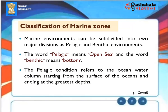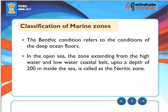The Variation of Marine Zones: Marine environments can be subdivided into two major divisions — pelagic and benthic environments. The word pelagic means open sea and the word benthic means bottom. The pelagic condition refers to the ocean water column starting from the surface and ending at the greatest depths. The benthic condition refers to the conditions of the deep ocean floors. In the open sea, the zone extending from the high-water and low-water coastal belt up to a depth of 200 meters is called the Neritic zone.